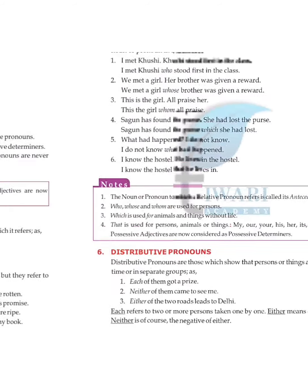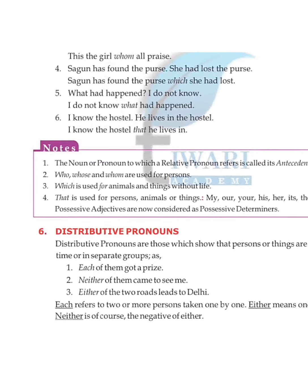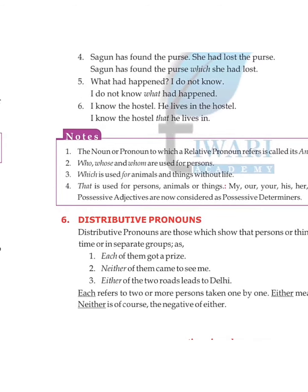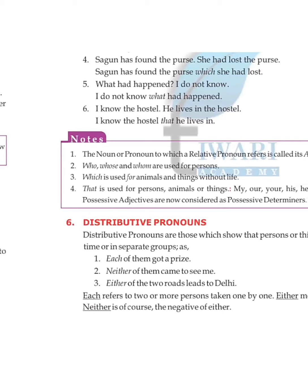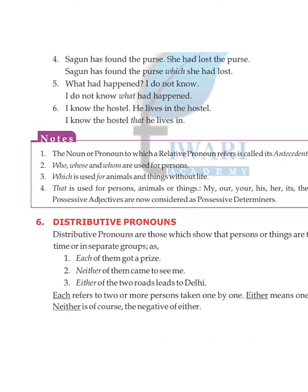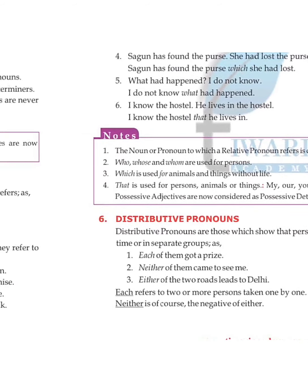Distributive pronouns are those which show that persons or things are taken one at a time or in separate groups. Examples: 'Each of them got a prize' — 'each' is a distributive pronoun. 'Neither of them came to see me' — 'neither' is a distributive pronoun. 'Either of the two roads leads to Delhi.' Each refers to two or more persons taken one by one; either means one or the other; neither is the negative of either.